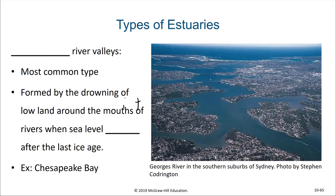There are several different types of estuaries, but they normally involve fresh water and salt water mixing in a sheltered environment. The most common type are called drowned river valleys, also called rias. They are formed by the rising of the sea level after the last ice age around the lowland mouth of a river — by the drowning of lowland around the mouths of rivers when sea levels rose after the last ice age.